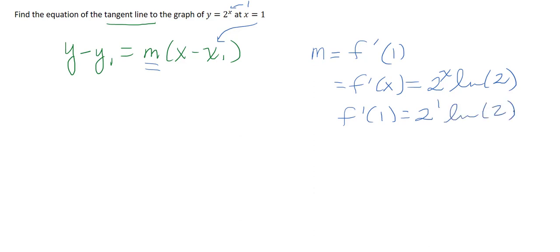And I throw that in my calculator, 2 times ln of 2. And I get 1 point... oh, they said to round to 1 decimal place. So I got 1.386, so that'll be 1.4.